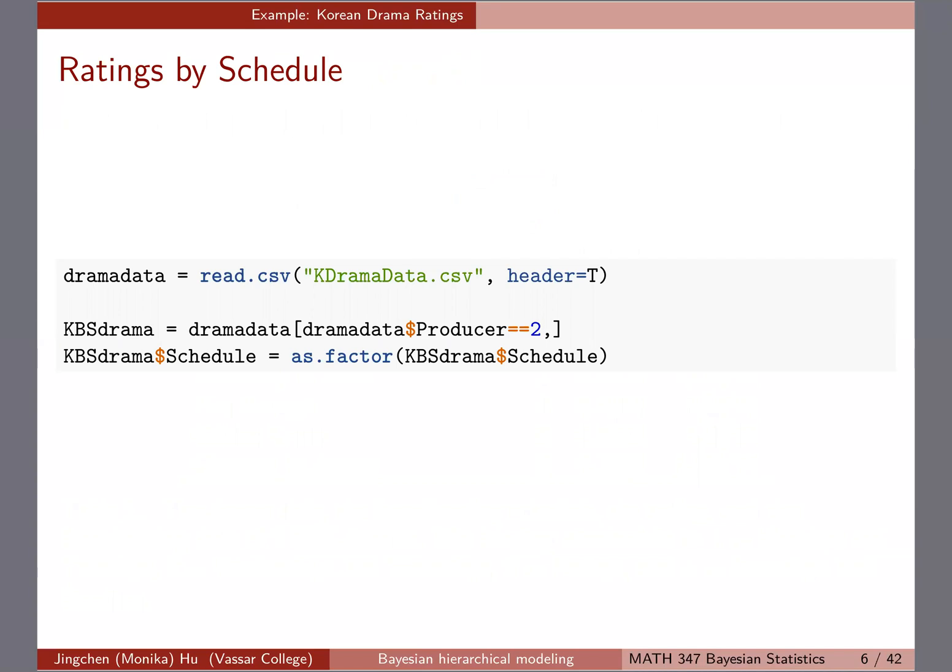We're also making the schedule a factor—one, two, three, four—instead of numeric, so we can work with factor data, which we should consider as categorical.